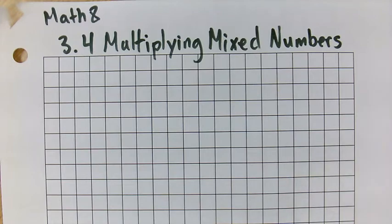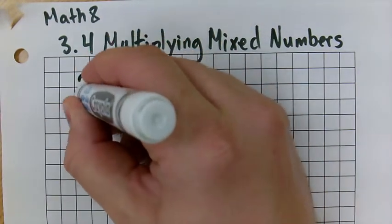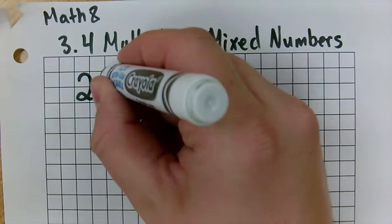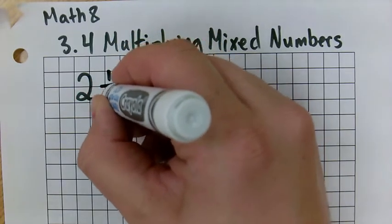Hello, Grade 8 Math. This is 3.4, Multiplying Mixed Numbers. We're going to do a little review of something you might have done in previous grades. A mixed number is a fraction and a number up front, for example, 2 and 1 third.